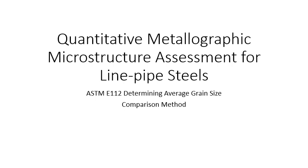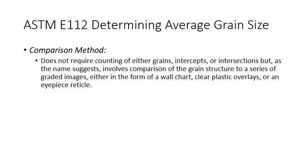This video is about using the comparison method of ASTM E112 for determining average grain size for linepipe steels. For the comparison method we don't have to count grains. Instead we compare the image of our microstructure on our screen with images of known grain size and we choose the standard that looks most similar in terms of grain size to our image.